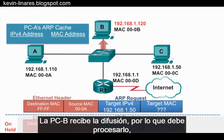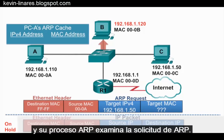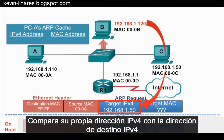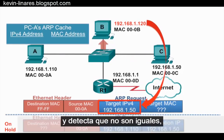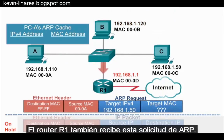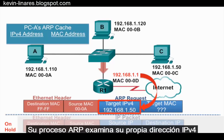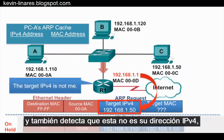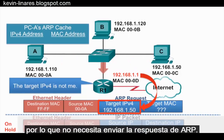PCA receives the broadcast, so it must process it. Its ARP process examines the ARP request, compares its own IPv4 address against the target IPv4 address, and notices they are not the same. Router R1 also receives the ARP request. Its ARP process compares its own IPv4 address against the target IPv4 address and also realizes this is not its IPv4 address, so it does not need to send the ARP reply.